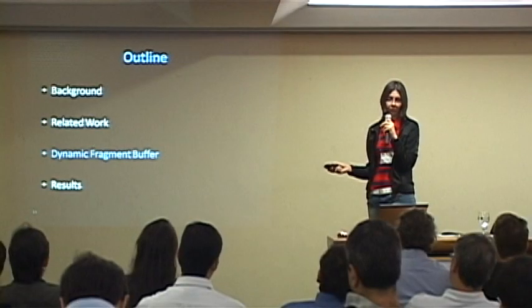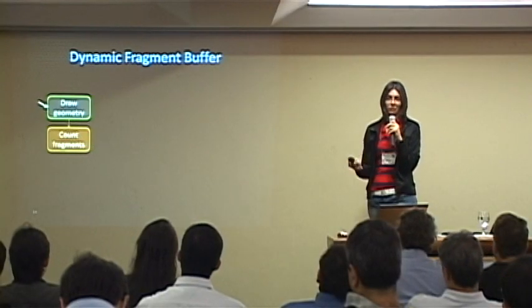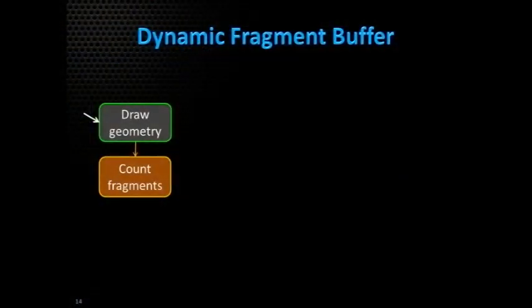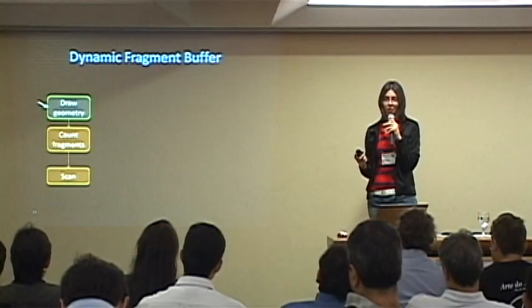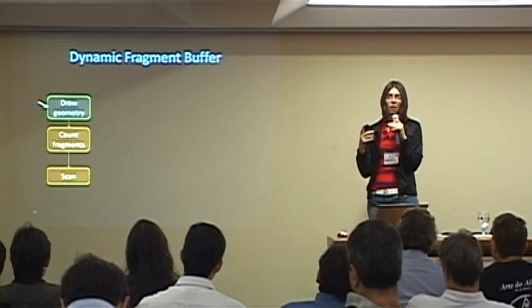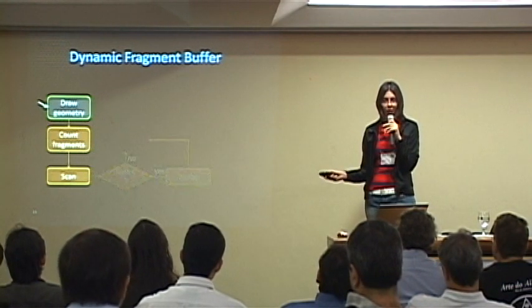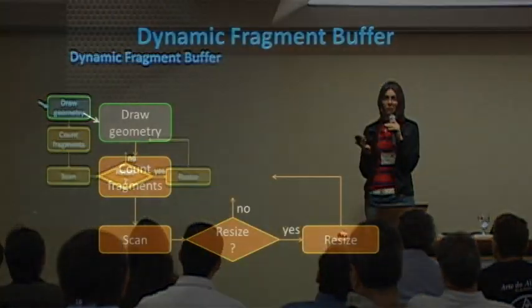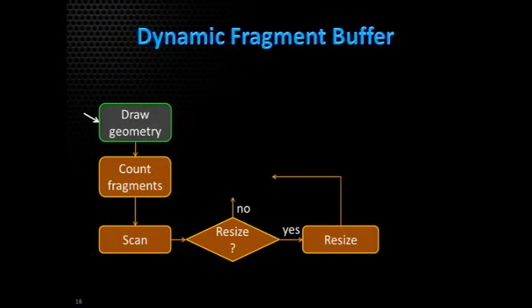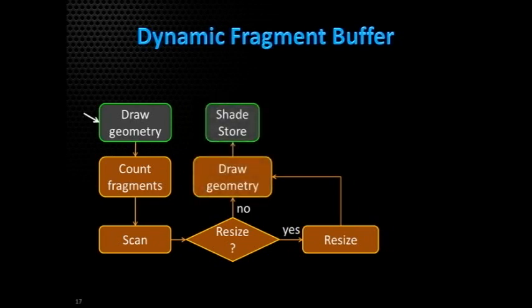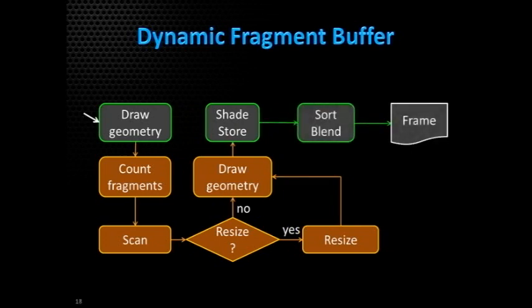What does our method do? We start by rendering the geometry and just counting how many fragments are generated. Then we perform a scan operation to create a base index for each pixel pointing to where in the shared buffer its list of fragments starts. We then check if the memory we currently have is enough to render the entire frame. Then we render the geometry again, shading and storing the fragments into the shared buffer. Finally, we sort and blend those fragments.